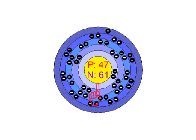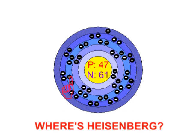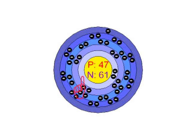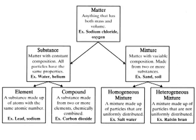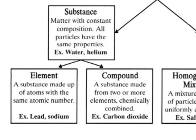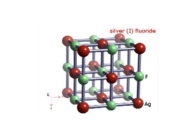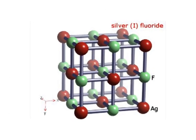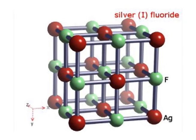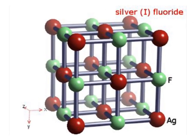The silver atom contains 47 protons in its nucleus. The electrons are contained in five energy levels, with the outer level containing only one electron. That single electron means that silver easily forms into compounds. For instance, the silver atom bonds with fluorine atoms to form the compound silver fluoride.